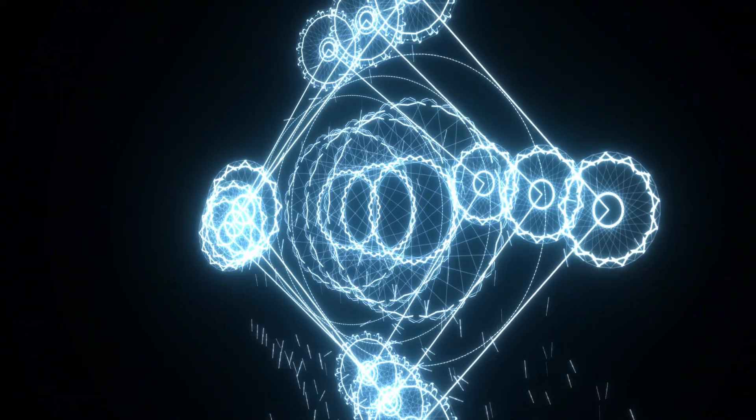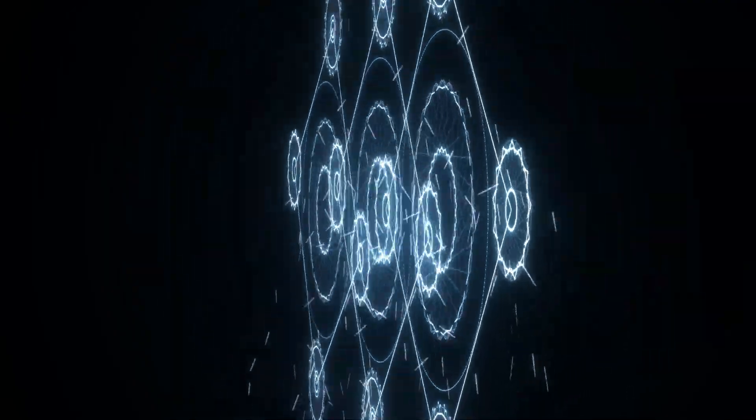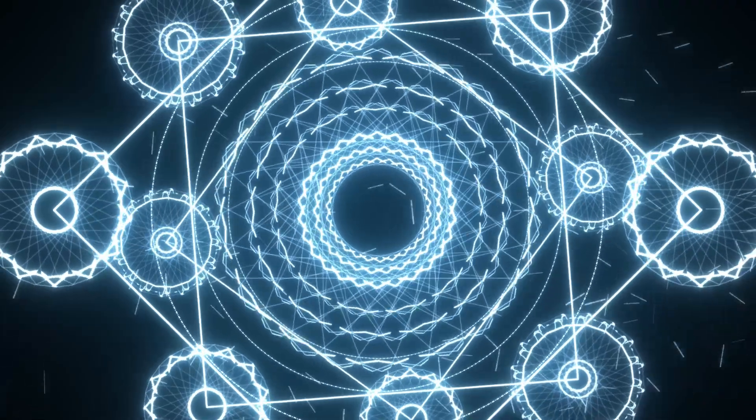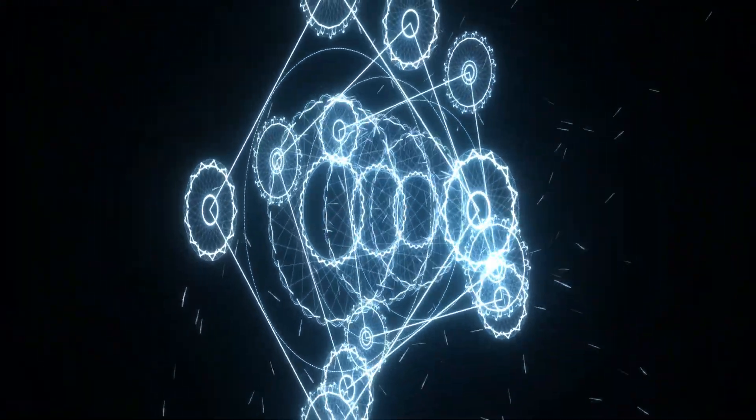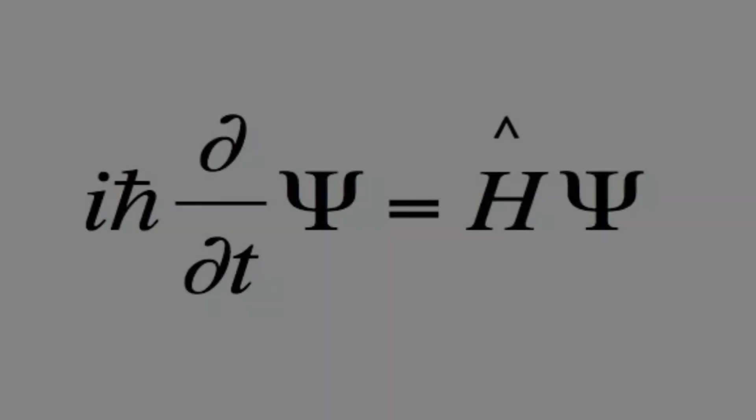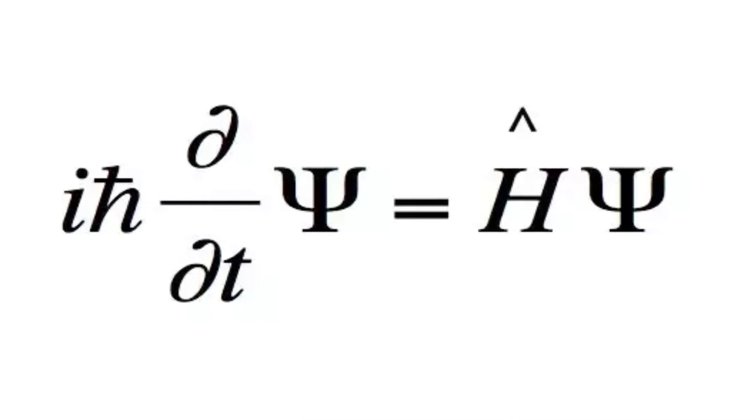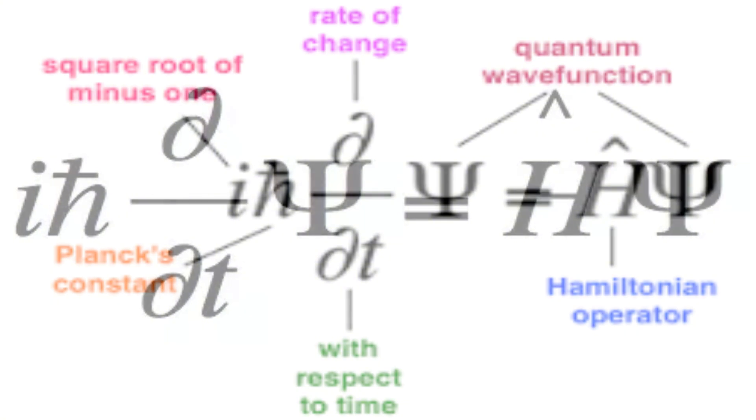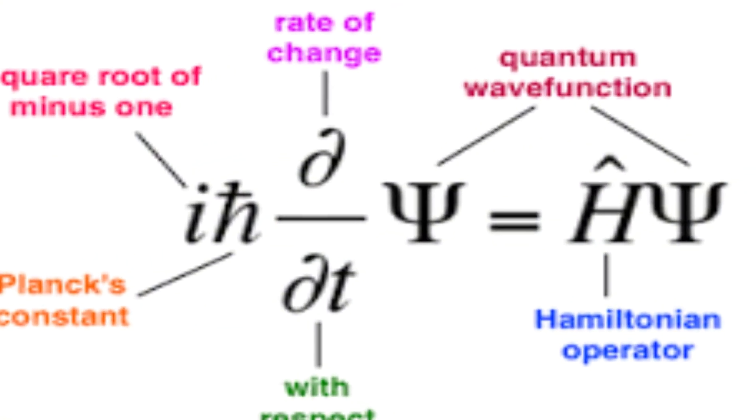We've seen that quantum tunnelling lets particles slip through barriers. But why does this happen? What's really going on at the fundamental level? To understand this, we need to dive into the strange mathematics of quantum mechanics. At the heart of it all is Schrödinger's equation, the mathematical rulebook that governs the quantum world.